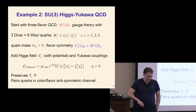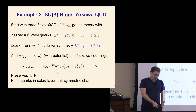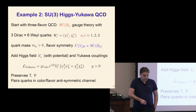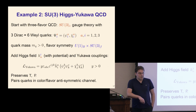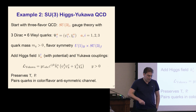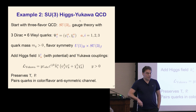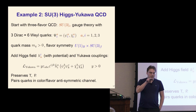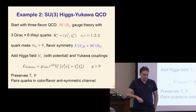We add Yukawa couplings. Here is the Higgs field, anti-bi-fundamental in color and flavor. Here is a diquark operator contracted with epsilon symbols in both color and flavor — so it's a color and flavor antisymmetric channel — with a Yukawa coupling in front. The Yukawa coupling can always be taken real and positive if you insist on time reversal and parity. This channel wants to pair diquarks in a color-flavor antisymmetric channel, chosen by analogy with high-density pairing in QCD.